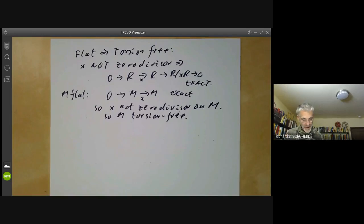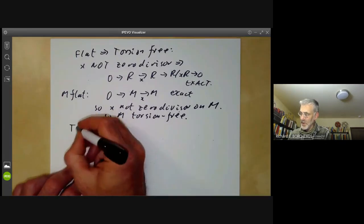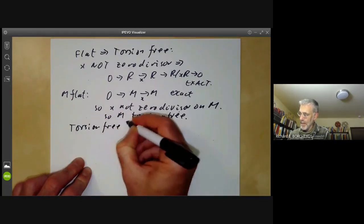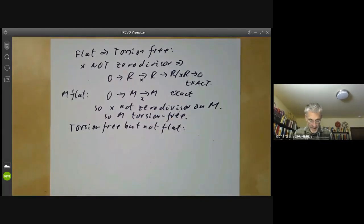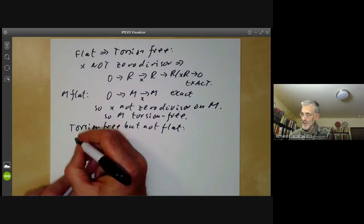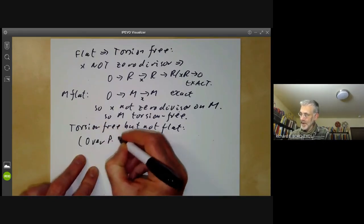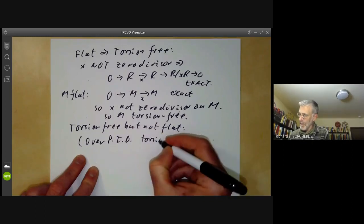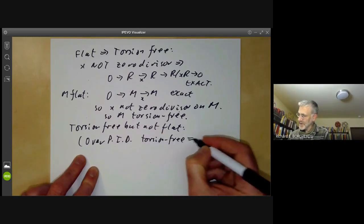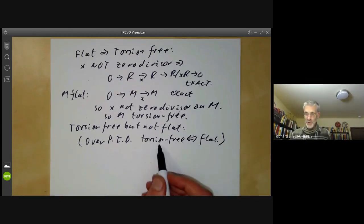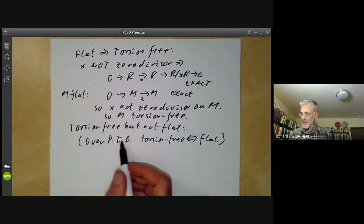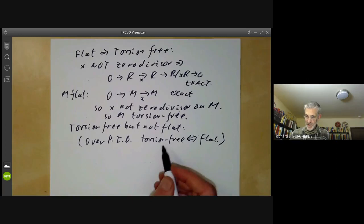On the other hand, there are many examples of torsion-free modules that are not flat. Well, first of all, over principal ideal domains, we can't do this. Let's just remark that over a principal ideal domain, torsion-free is the same as flat. This is probably the only reason why people use torsion-free modules at all.